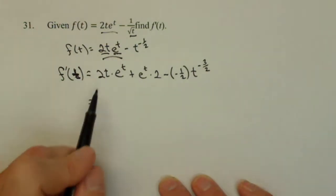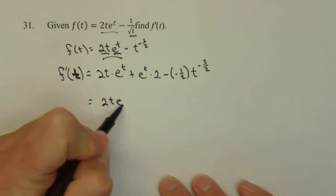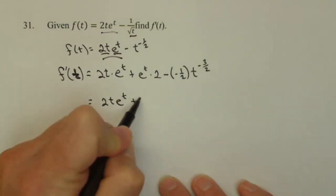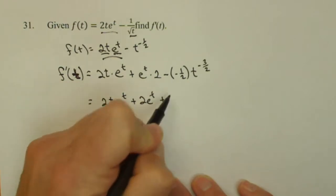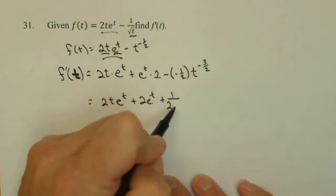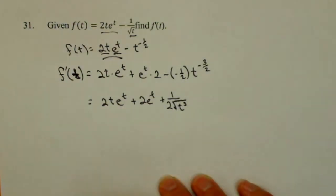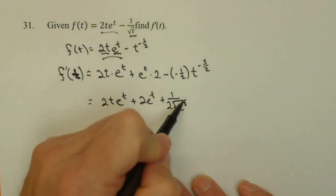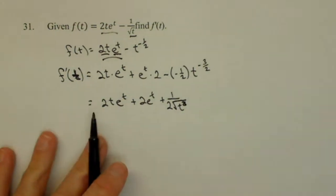We can clean this up a little bit if we want. There's not too many like terms we can combine. So we have 2t e to the t plus 2e to the t minus a negative 1 half. We might change that into a plus 1 over 2. And then t to the negative 3 halves is square root of t cubed. It goes in the denominator because of the negative exponent. And it's a t cubed if you can't quite read that. That's it.